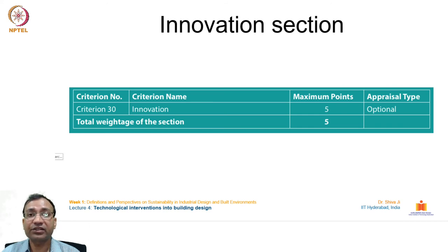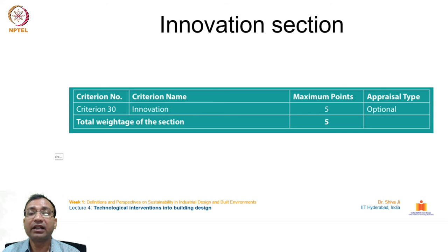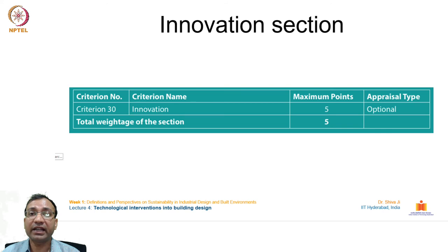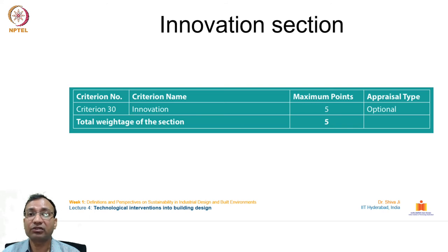With this we have discussed all 11 sections and their criteria in the GRIHA rating system. Some criteria fall under mandatory categories — though carrying no points, failure to satisfy them means the project cannot proceed with GRIHA certification.